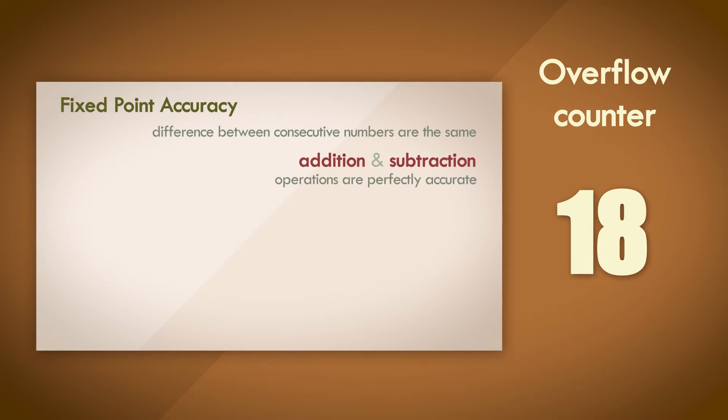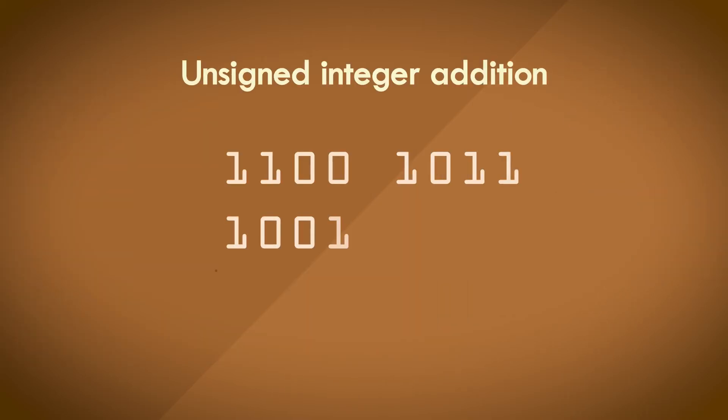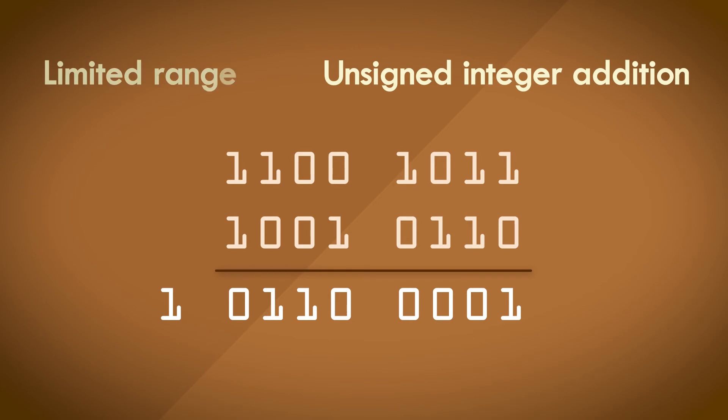I mean, if just adding two arbitrary numbers could result in a number that would never fit into the space allocated for it and would flow over it, then it's a problem. More generally, range is a problem. The range is limited with the fixed point number format, and we need to address that.